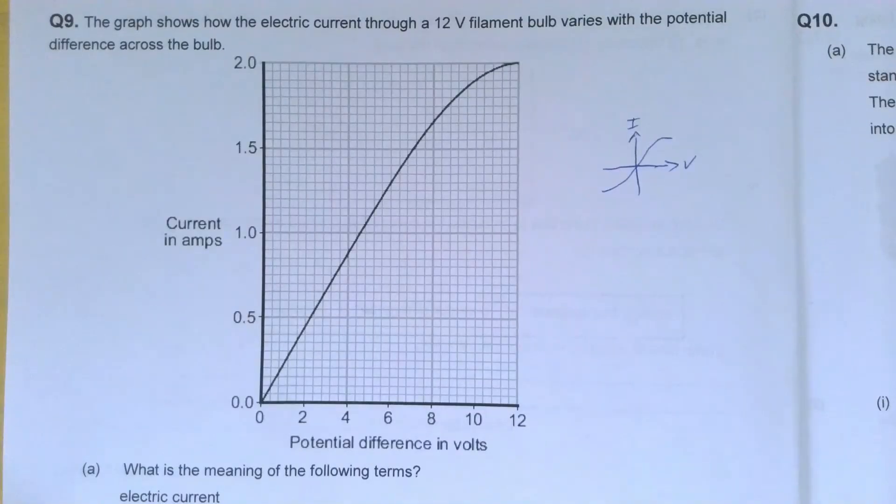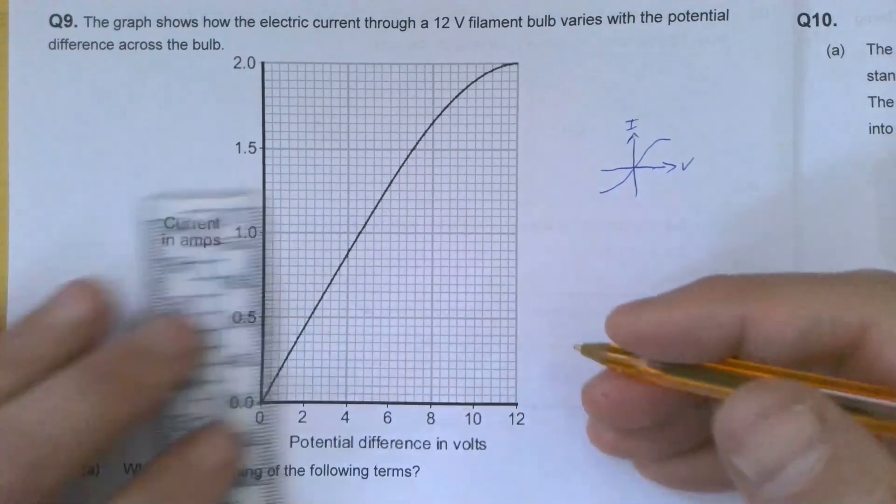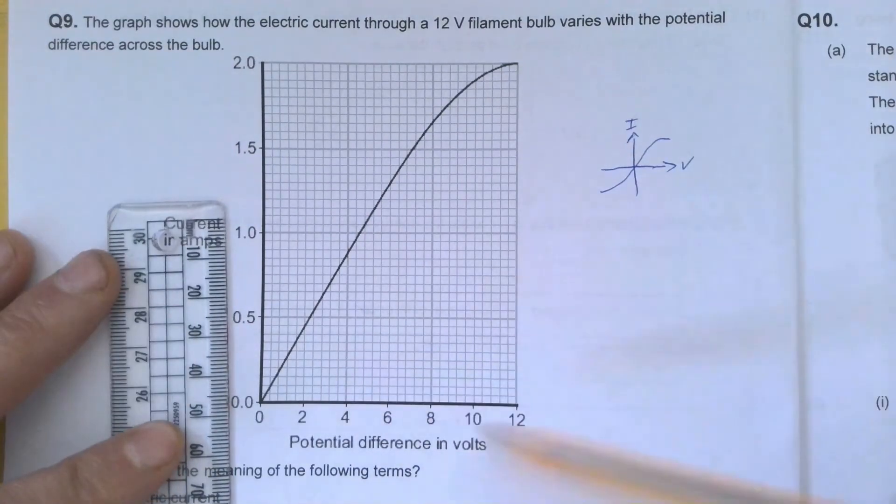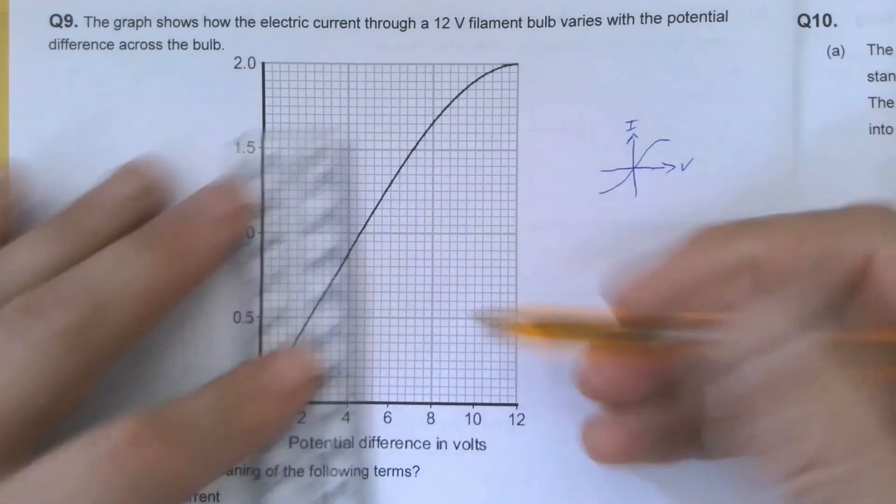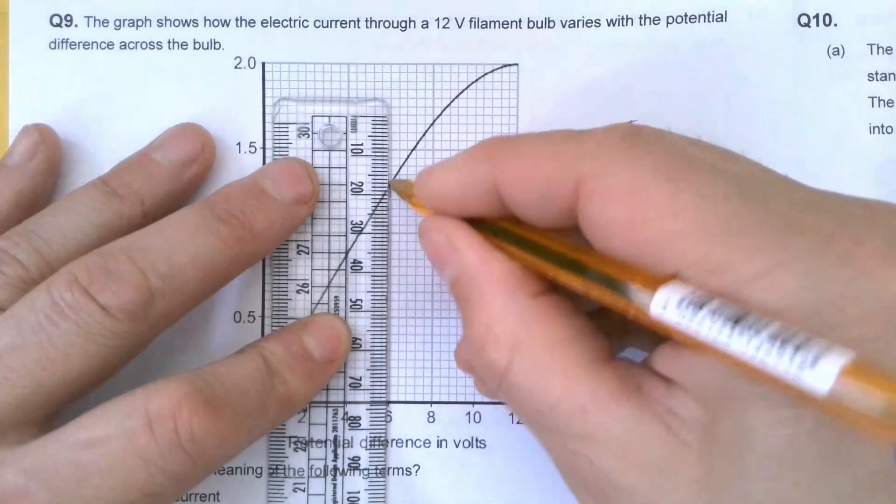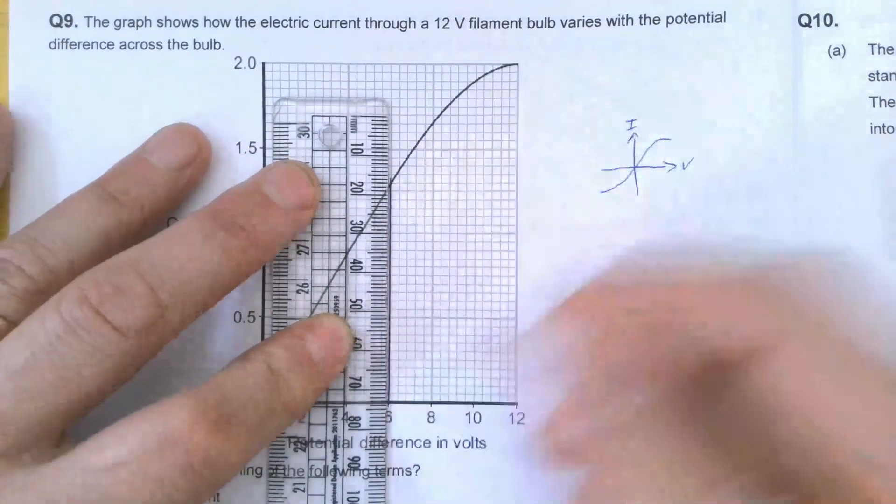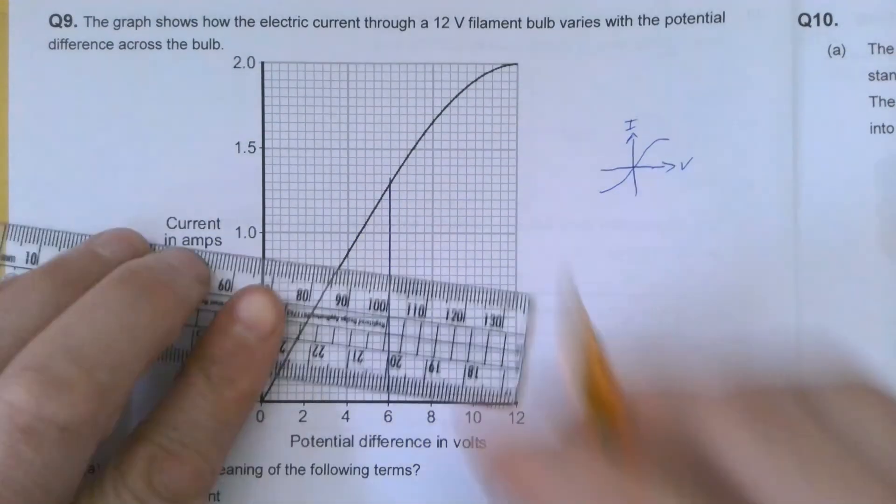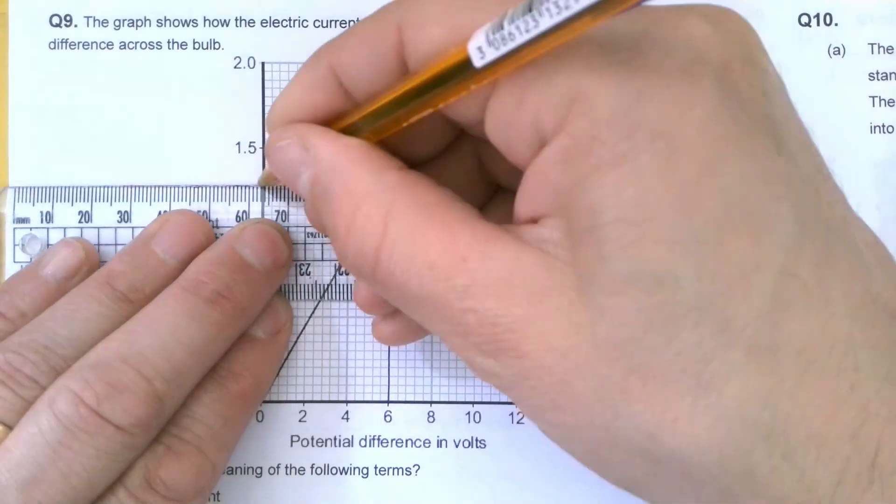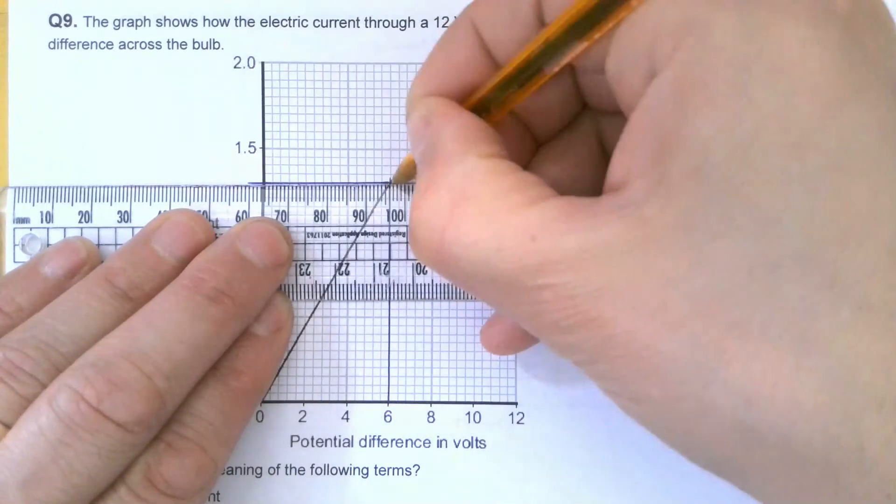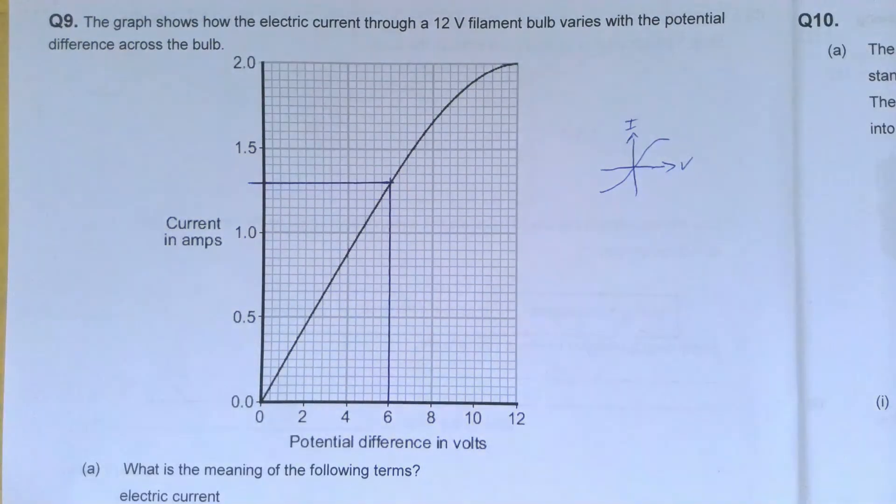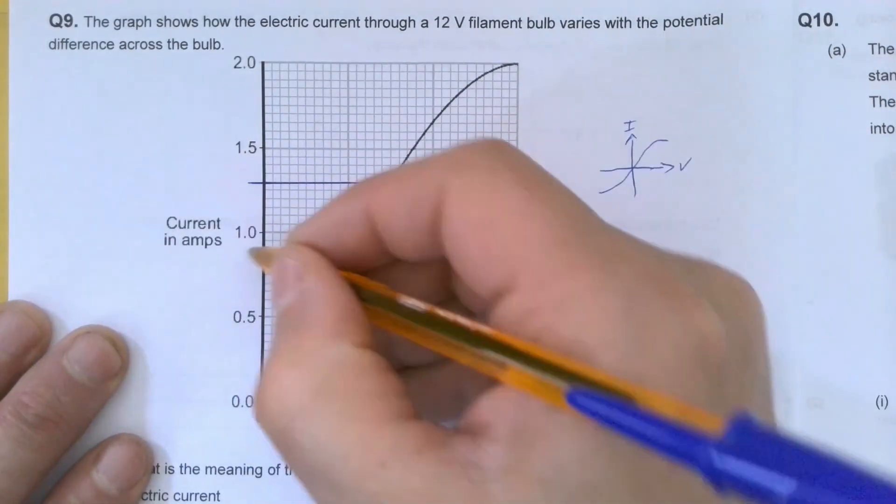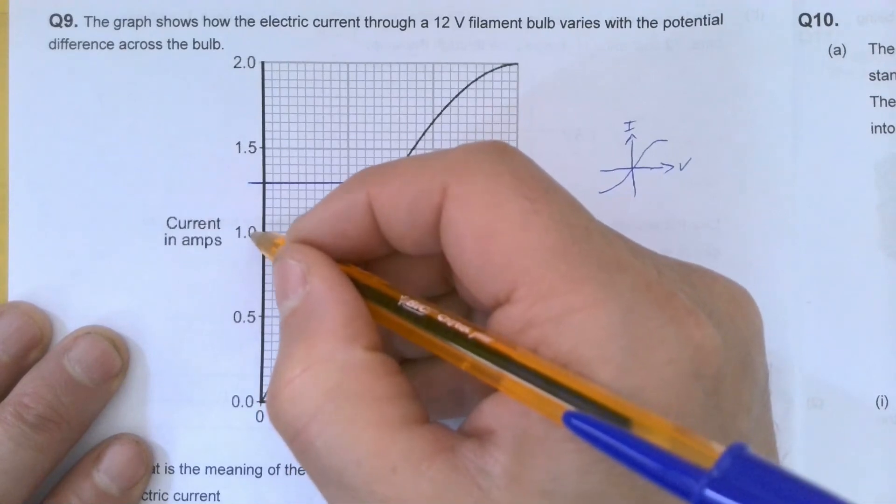If the question says use the graph, I have to show that I've obtained data from the graph. The easiest way to do that is to use a ruler and draw on the graph itself. When the potential difference is 6 volts, I need to know what the current is. I'm going to draw a line up there and a line straight across there. I want to demonstrate that I've used the graph because I need to get credit. If the examiner doesn't think I've used the graph, then I can't get credit for it. Even if I write down the wrong answer here, I should still get some credit for it.